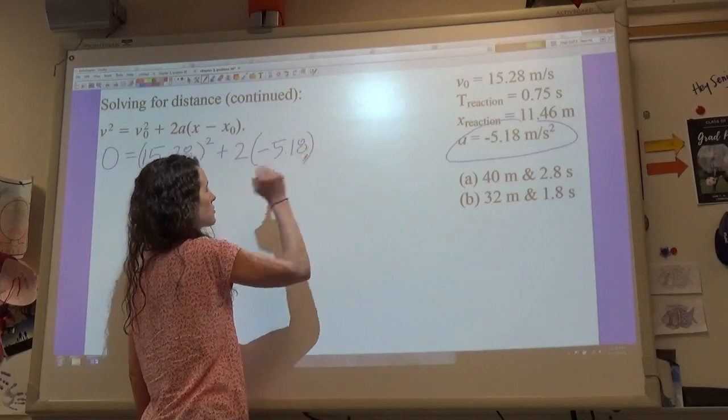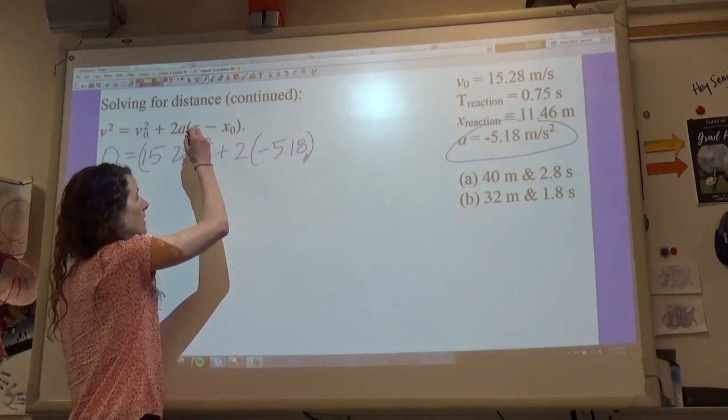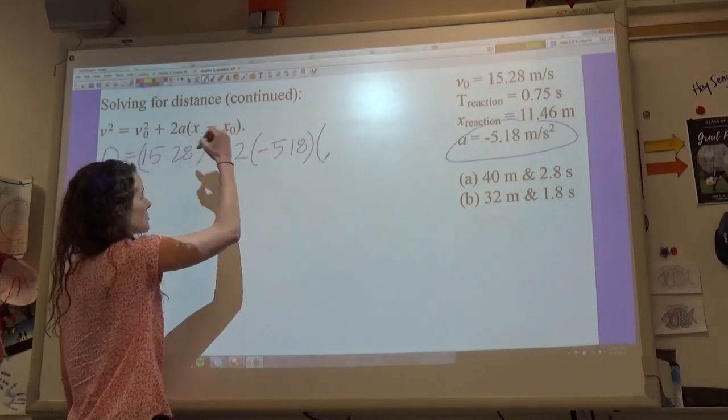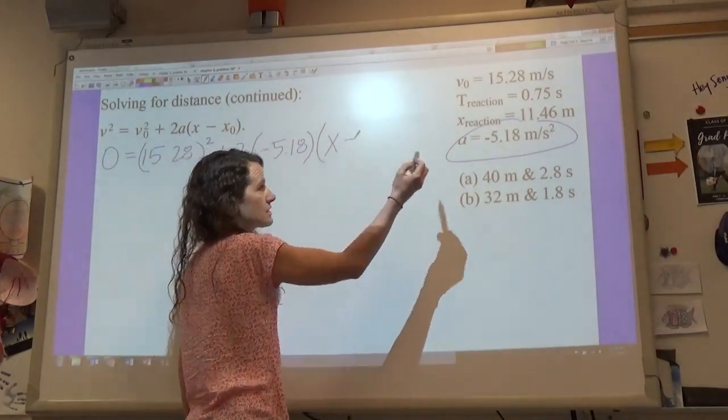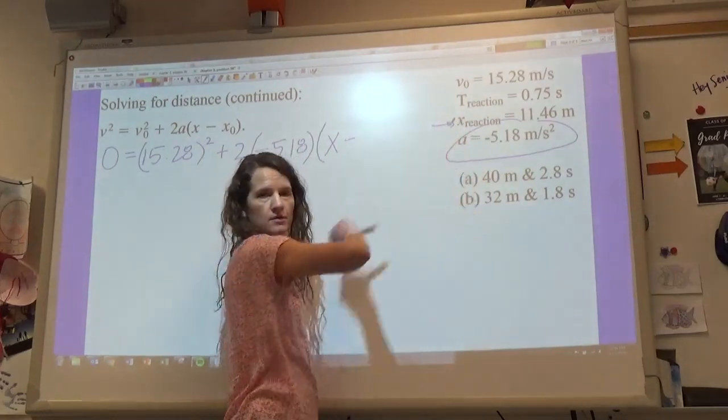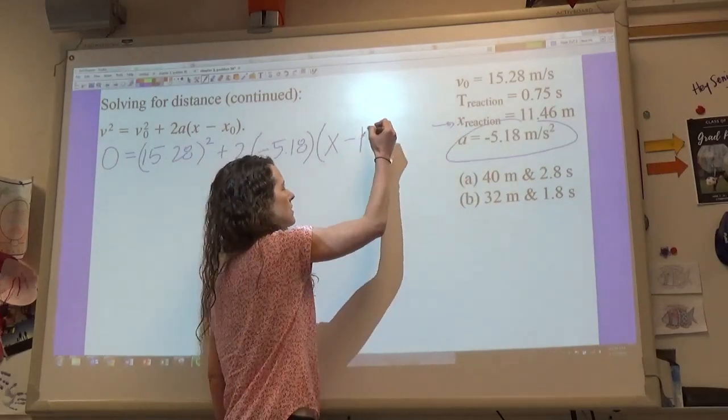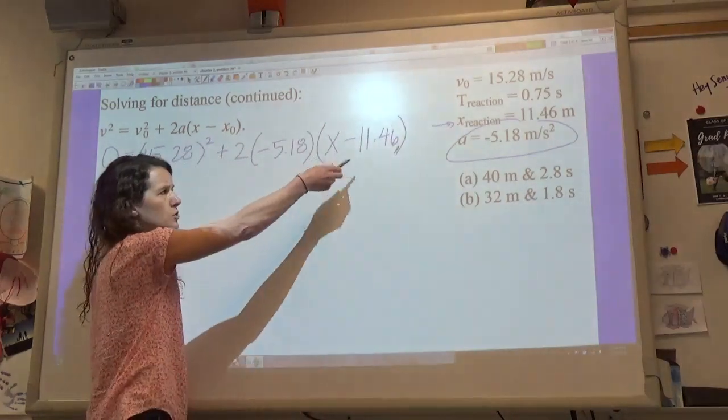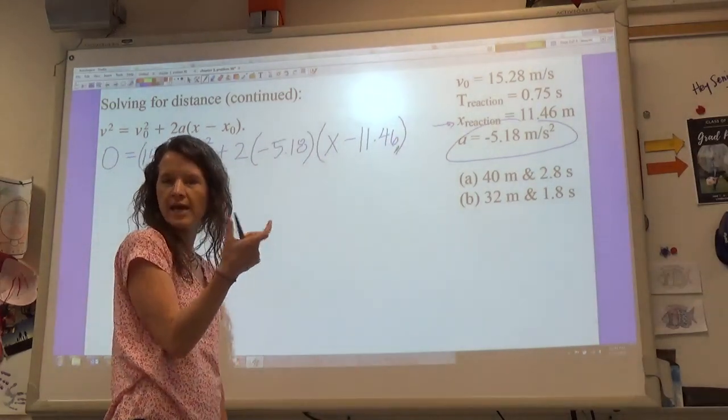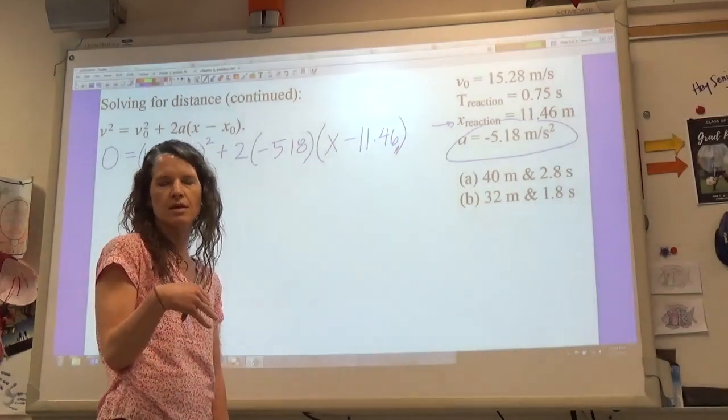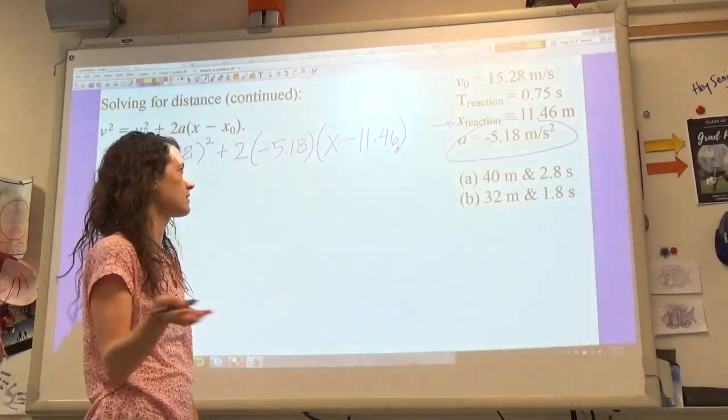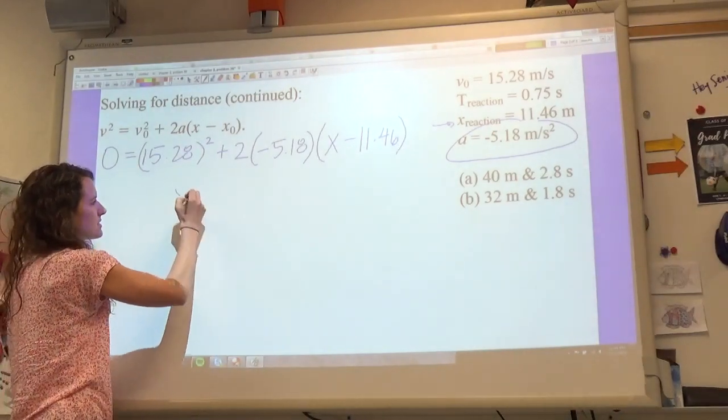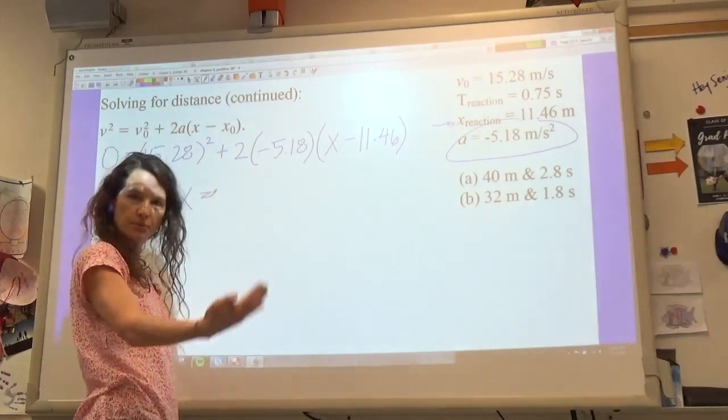And then plus two times our acceleration, and of course your acceleration is negative, so -5.18 meters per second squared. My distance, so my final distance is what I'm trying to solve for, so that's x. But our initial distance is where we ended from our reaction time, so that was our 11.46 meters. If you chose to just solve for the change in x and then later add on the 11.46, that works in exactly the same way and that would be fine. So if you work this out in your calculator, you'll find out that that distance that you're going to travel when you are attempting to brake is going to work out to be 34.0 meters.